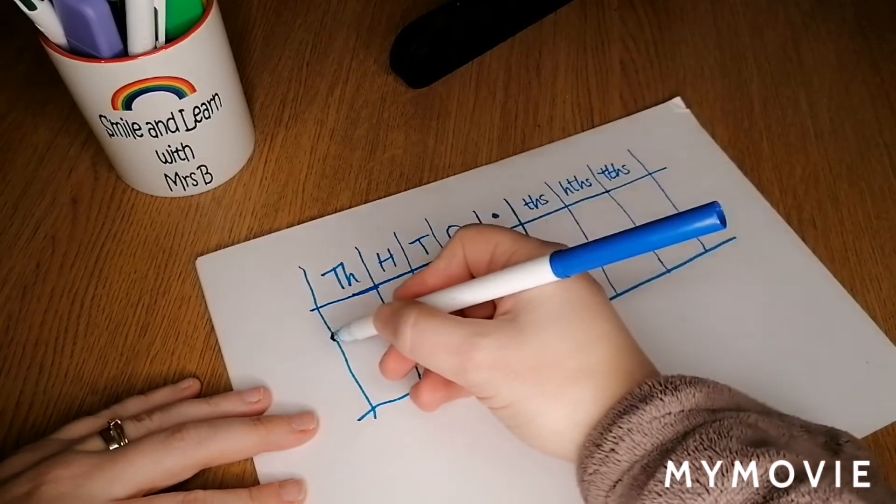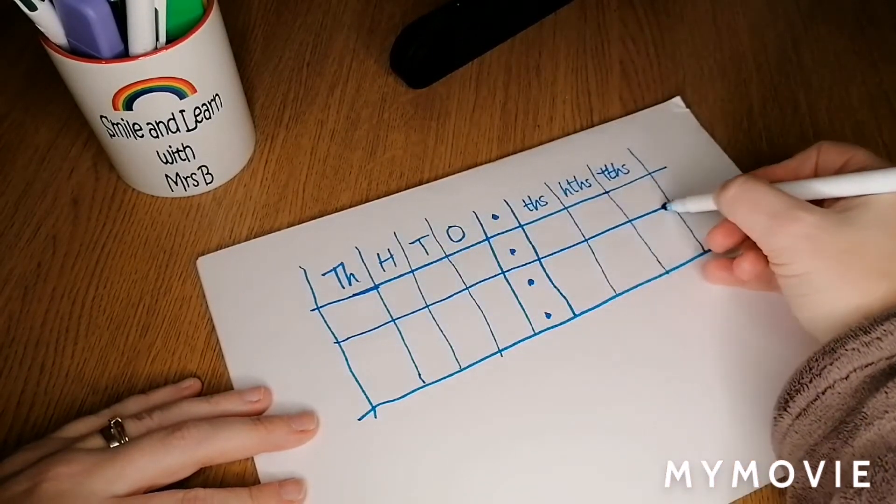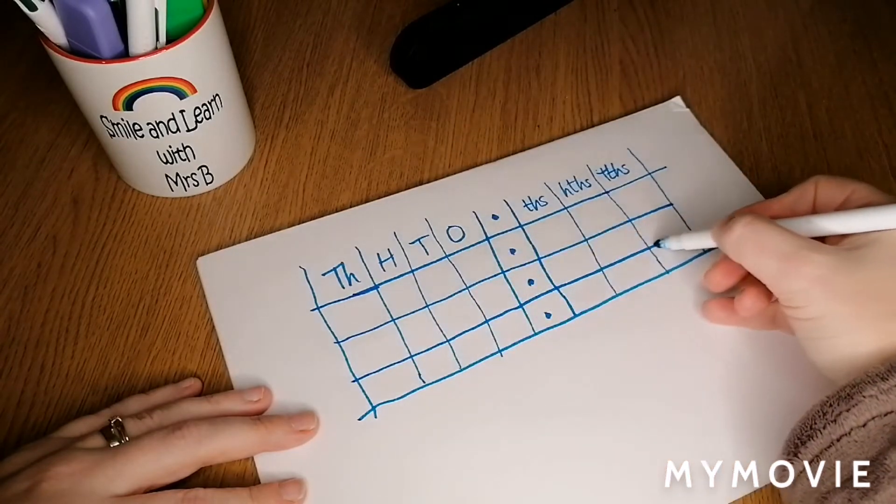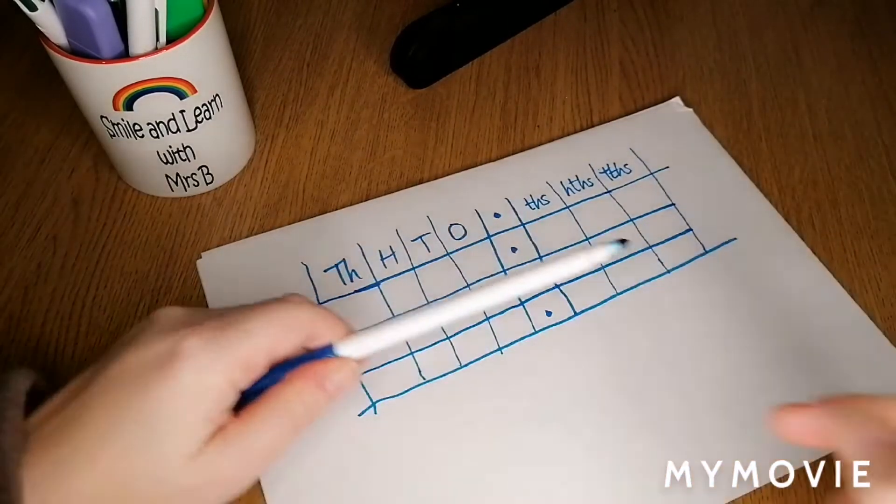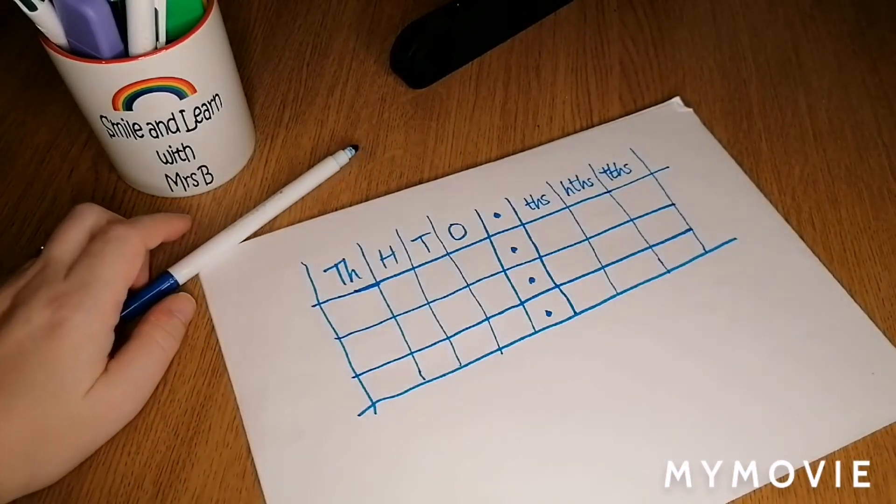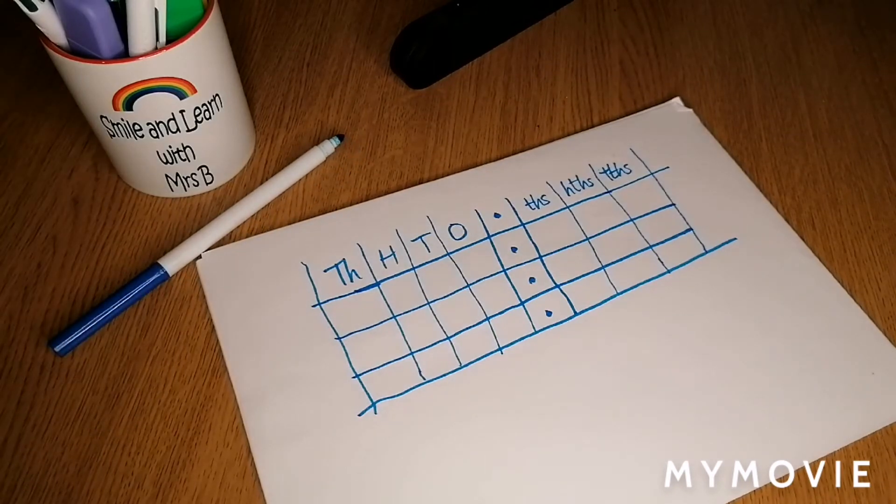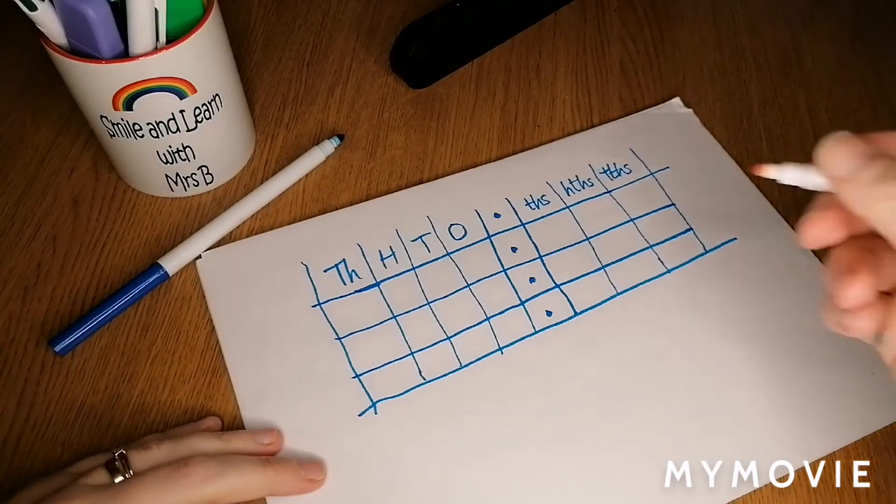I'm also going to use the decimals to split into rows here so you can see how this will work and consider various numbers. Let's change color and let's put a number on here. Let's think of 10.